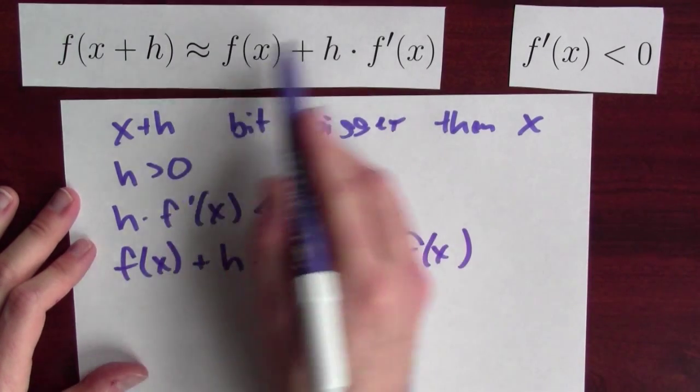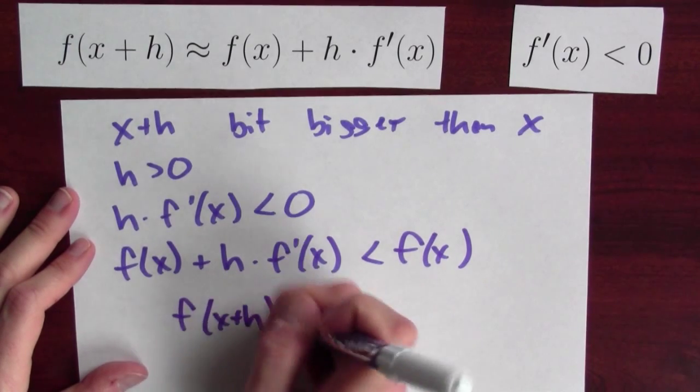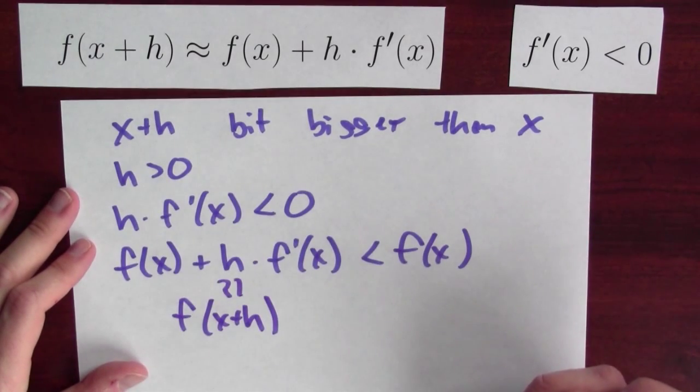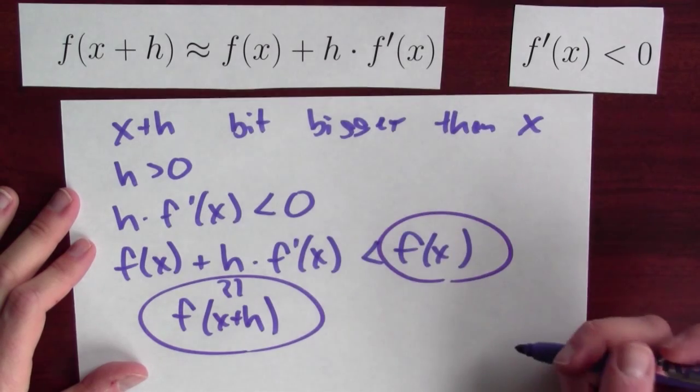But this is approximately the new output value of the function at x plus h. So, I've got that the function's output at x plus h is a little bit less than its output at f.